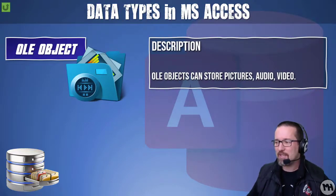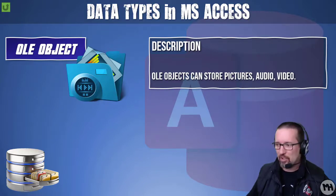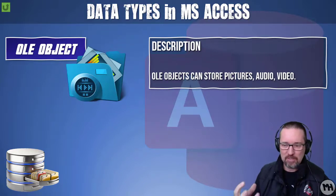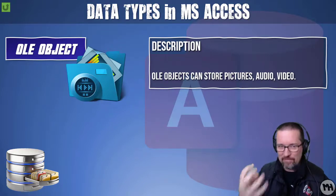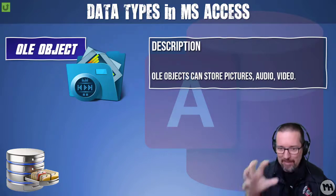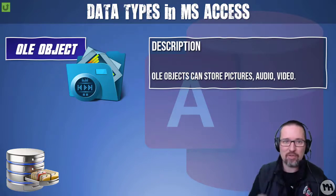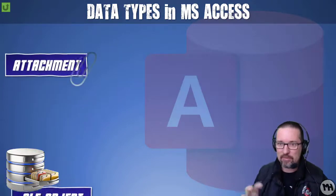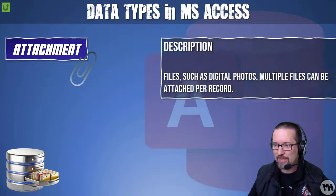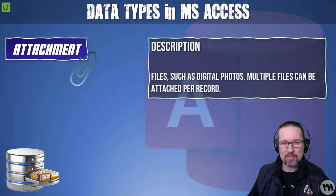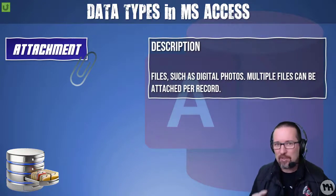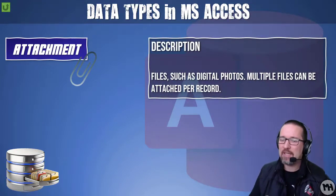An OLE object can store pictures, audio, and video. It's an actual video file or video clip embedded in the record — it plays when you click on it.